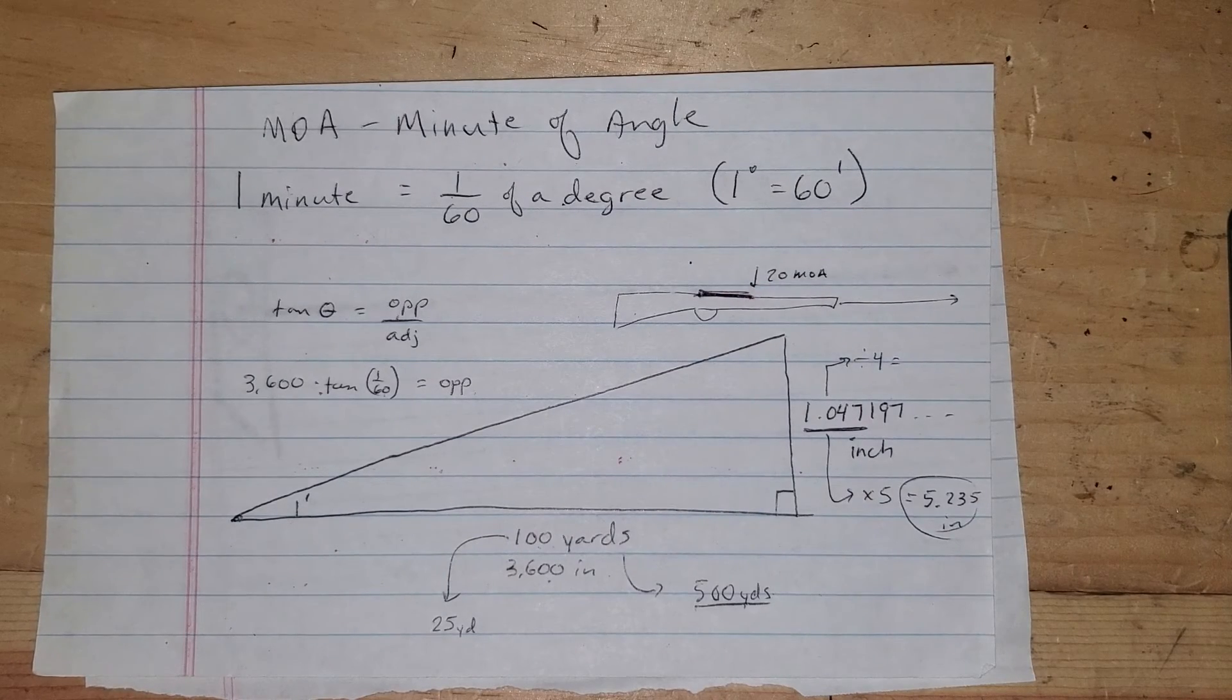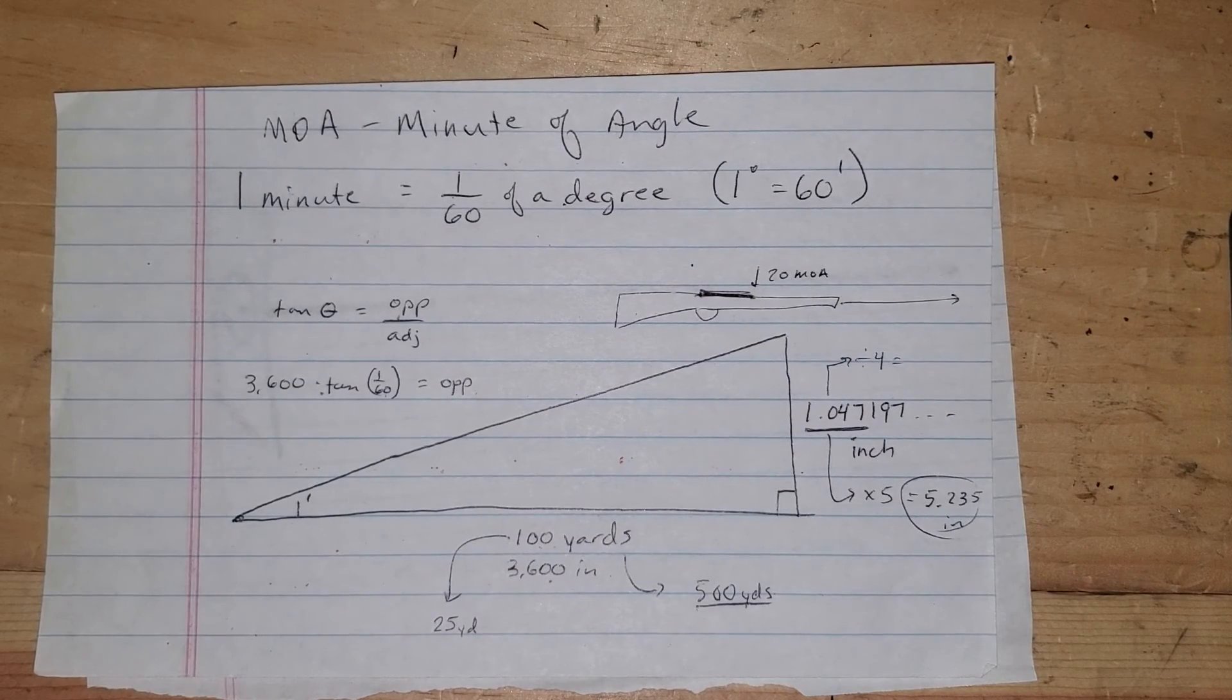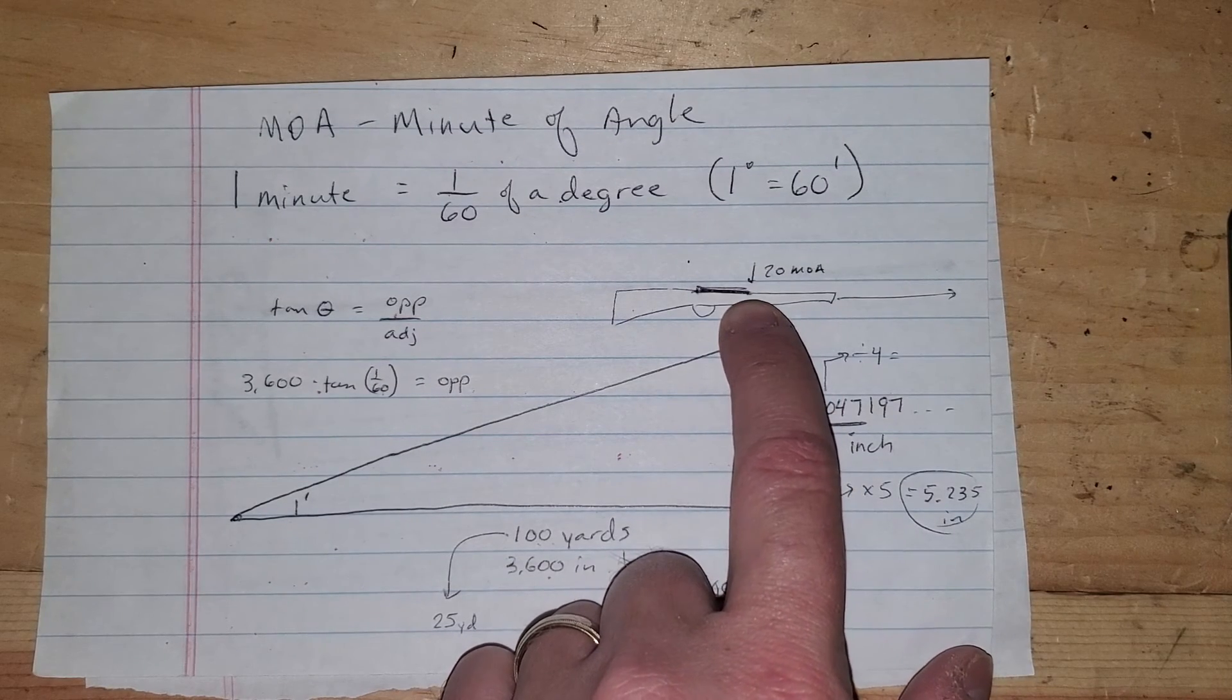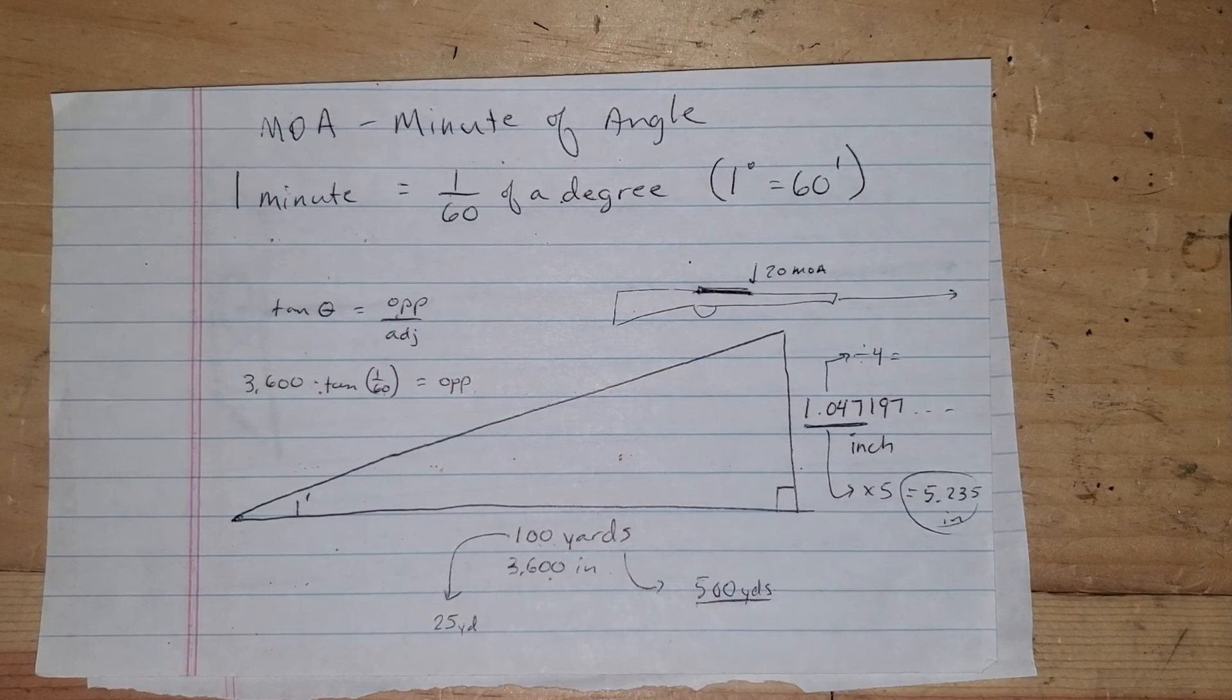He does not need a 20 MOA rail. If you're not going out past 500 yards, a 20 MOA rail is really no good for you.